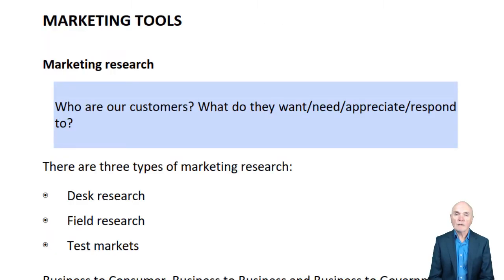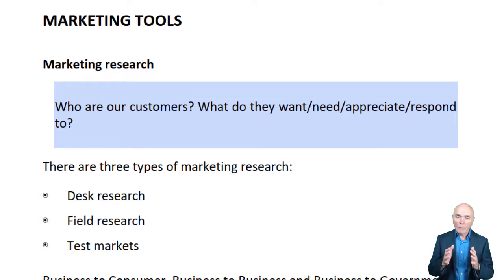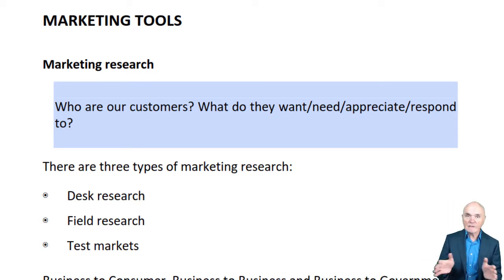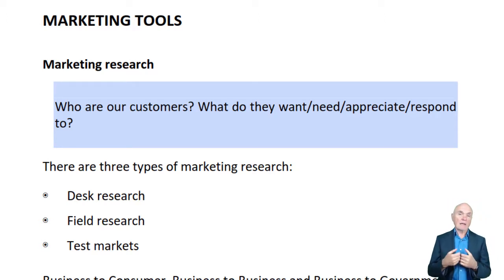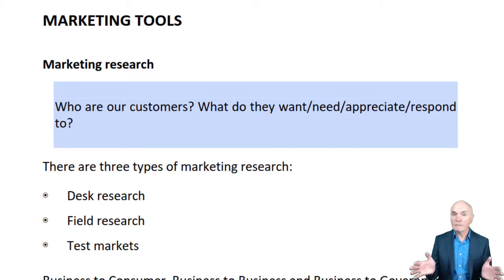The first marketing tool we'll look at is marketing research. Quite often you'll hear of market research, but market research strictly just means finding out what the market is, who these people are, who are buying from you. Marketing research looks at all aspects of marketing — all of the four or seven P's really come into that.